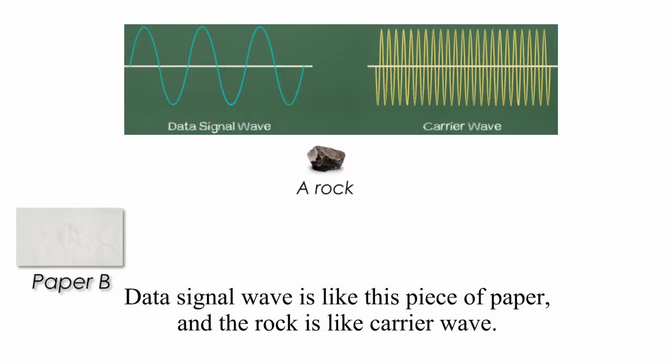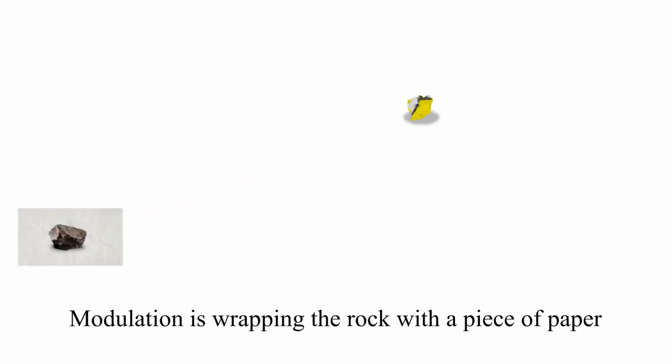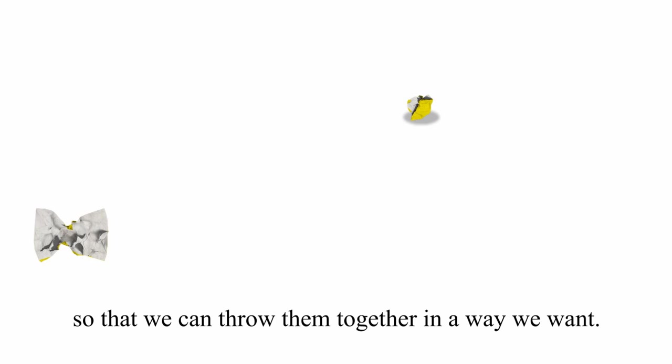Data signal wave is like this piece of paper, and the rock is like a carrier wave. Modulation is like wrapping the rock with a piece of paper so that we can throw them together in a way we want.